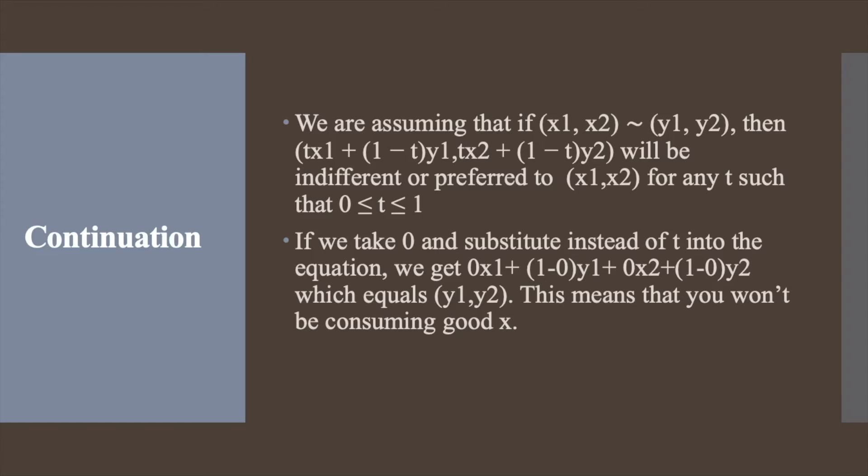This means that t can be half as we took the case of average, or it can be 1/3, 1/4, or anything starting with 0 and going till 1 where 0 and 1 are the two extreme cases.